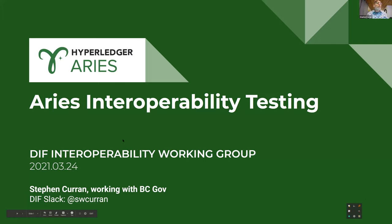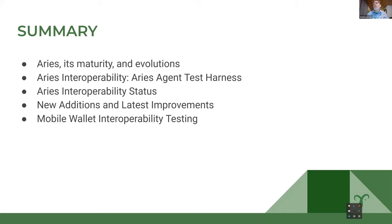We can start with ARIES. ARIES interoperability testing is what we're talking about — bringing folks up to date on where ARIES is for those who aren't day-to-day involved. Interoperability is big for us, and we use a thing called an ARIES agent test harness to do that. We're now publishing an updated status on a regular basis of how we're doing on interoperability.